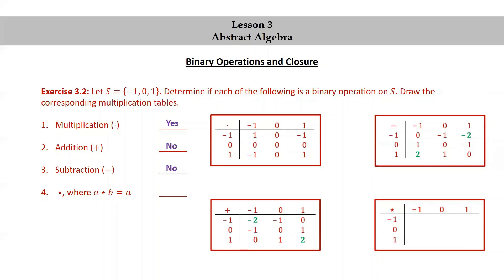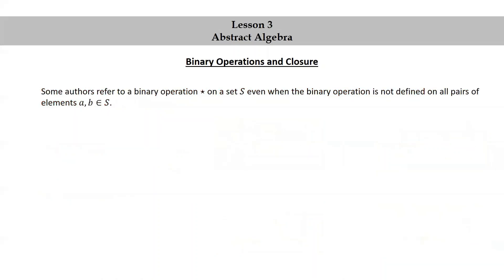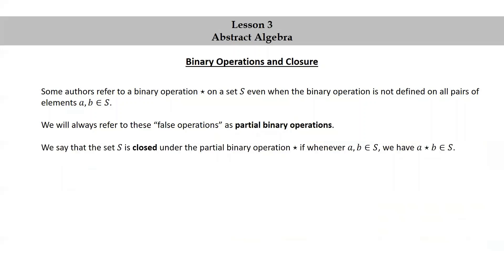For the last one, we have star where A star B is equal to A. The output A is one of the given inputs, so the answer is yes — this operation star is a binary operation on the set S. Some authors refer to a binary operation star on a set S even when it is not defined on all pairs of elements A, B in S. We will always refer to these as partial binary operations. We say that the set S is closed under the partial binary operation star if whenever A and B are in S, we have A star B in S.